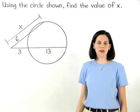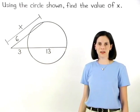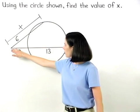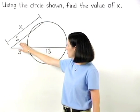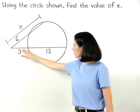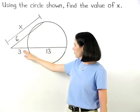And remember that if two secant segments are drawn to a circle from an external point, then the product of the lengths of one full secant segment and its external segment is equal to the product of the lengths of the other full secant segment and its external segment.